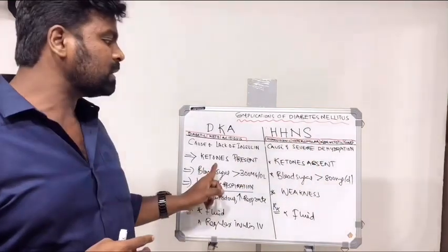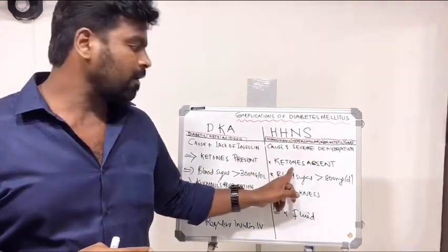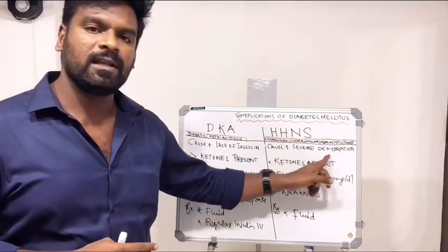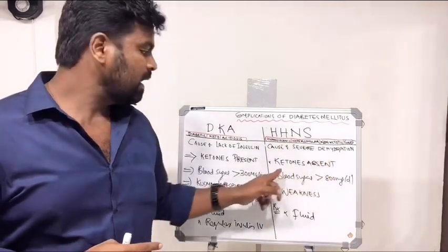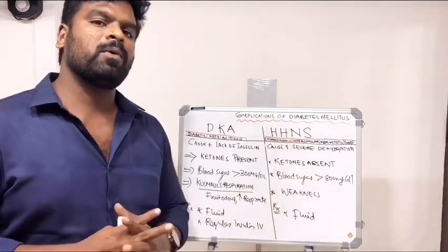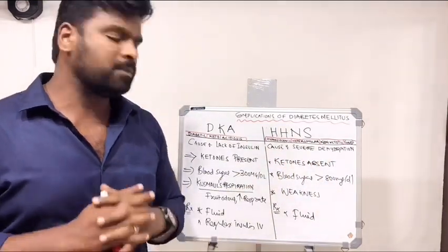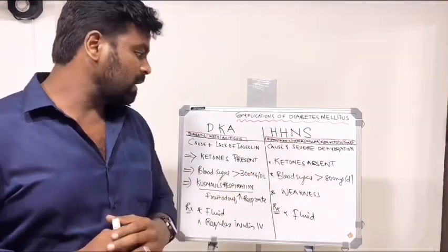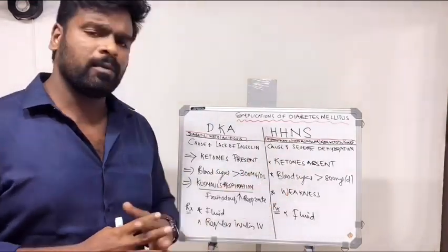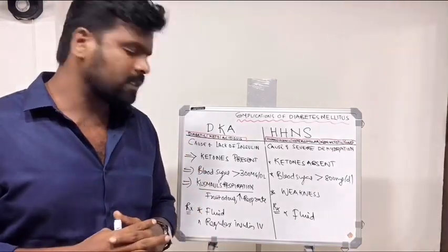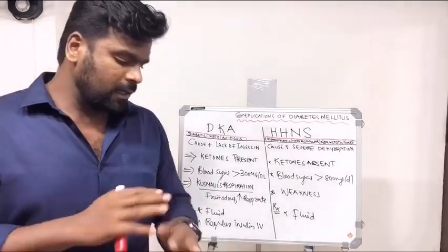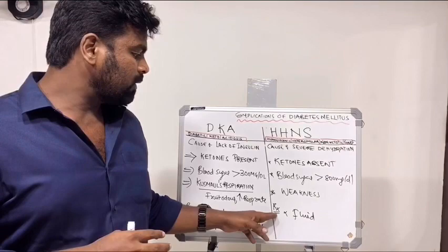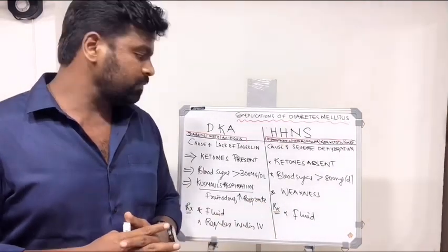To compare: in DKA, ketone bodies are present, whereas in HHNS, ketone bodies are absent. The main cause for HHNS is severe dehydration, and the blood sugar can be seen above 800 mg/dL. The patient will have severe weakness and the skin will be very dry. The treatment is fluid resuscitation.